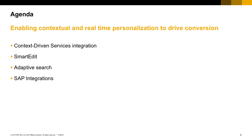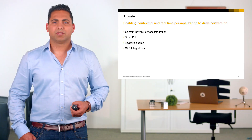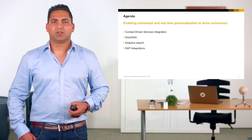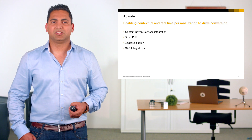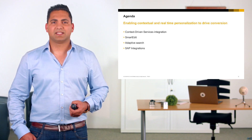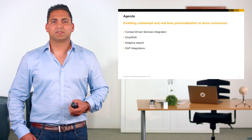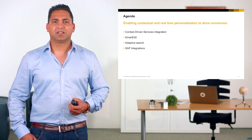SAP Commerce Cloud 1808 includes key enhancements to deliver contextual and real-time personalization that drives conversion, raises order value, and increases customer satisfaction and loyalty. One of the main new features is the integration with a context-driven services solution, which provides real-time personalization features. Further enhancements in SmartEdit and adaptive search for experience management offer more control and flexibility to business users.